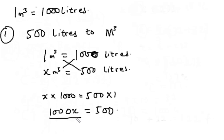Dividing both sides by one thousand, we have x, one thousand cancels out one thousand, and then five hundred divided by one thousand is one over two. So x equals to one over two.